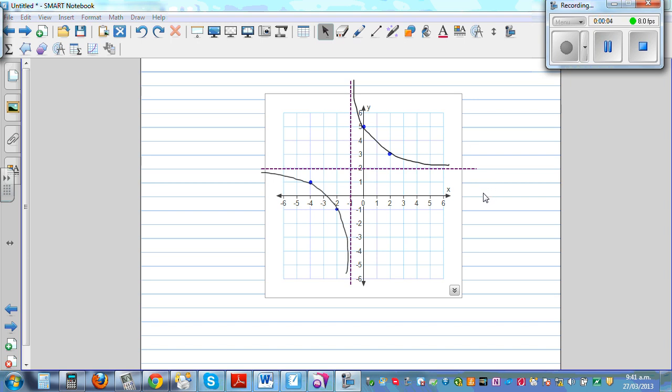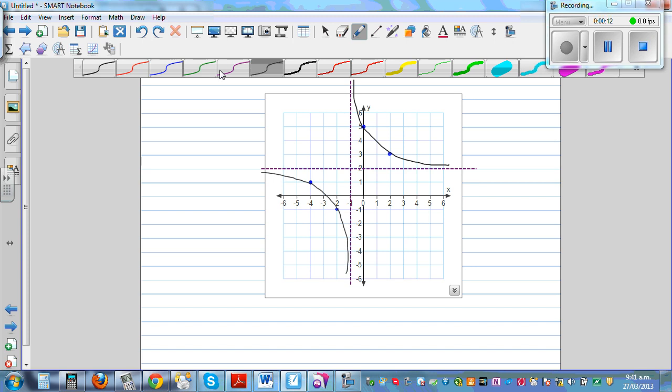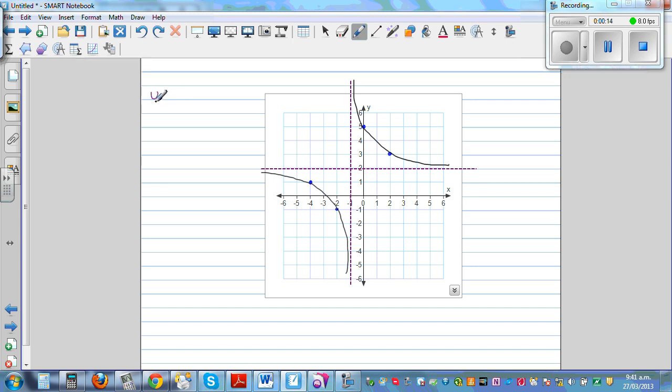Let's write the equation of this graph, which is a hyperbola. The general form of a hyperbola is y equals plus or minus a over x plus or minus b, plus or minus c, where a can be positive or negative.